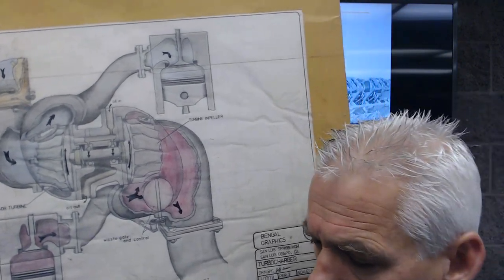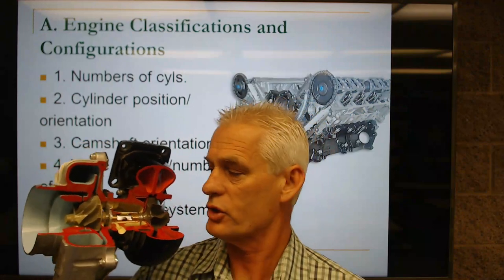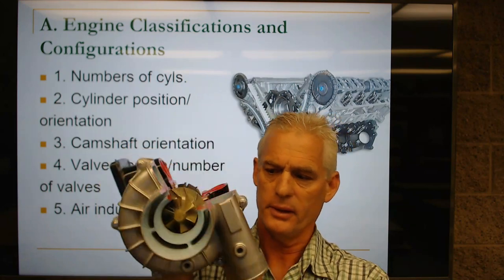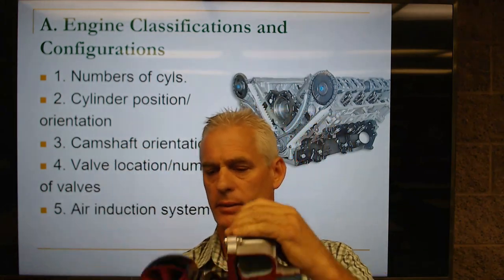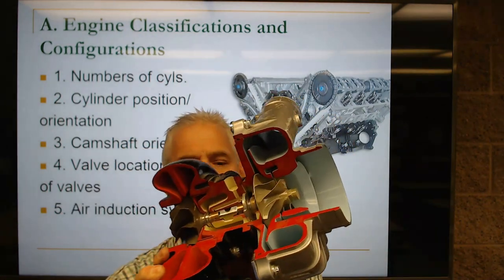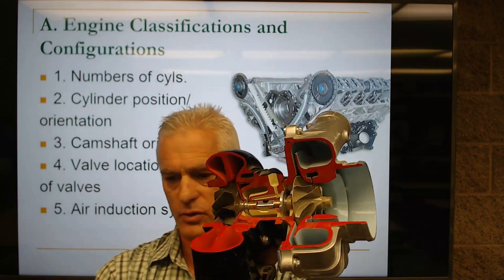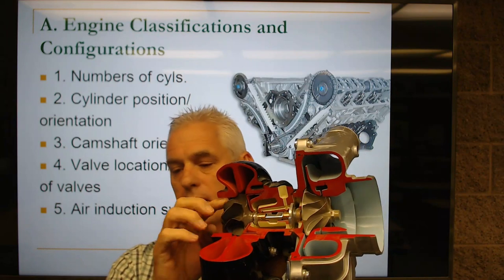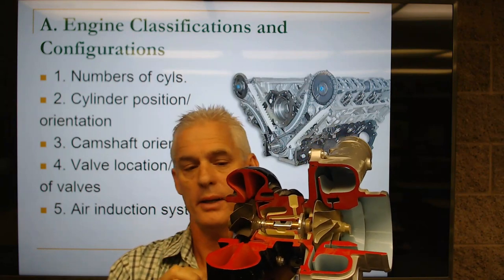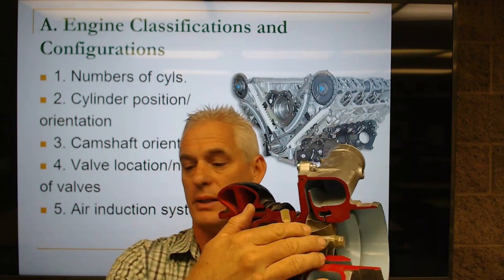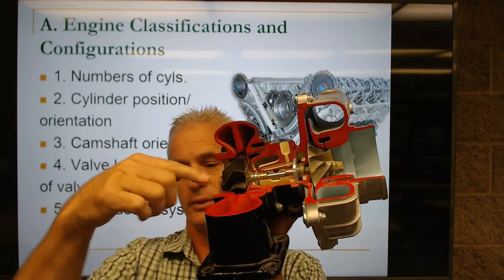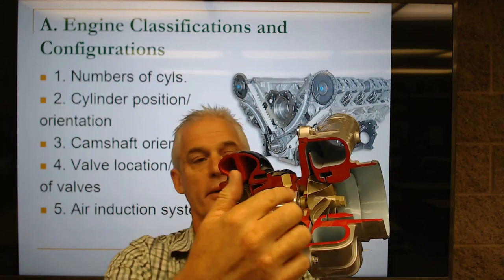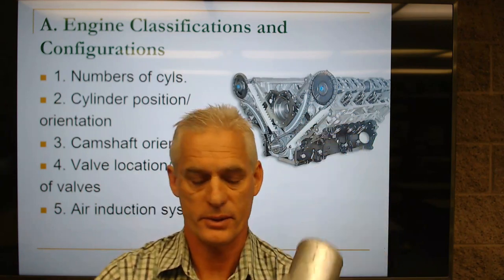Let me show you a cutaway of a turbocharger. On the exhaust side here is the turbine impeller spinning the compressor on the other side. Exhaust flows around getting this turbine going, and this compressor side pumps air into a cylinder. You can also see where the belt drives the supercharger and the screw inside forcing the air down into the engine.